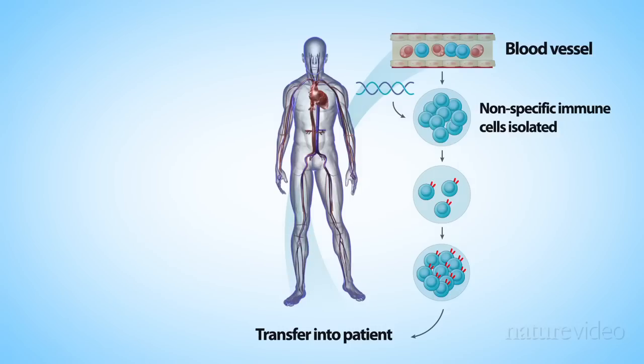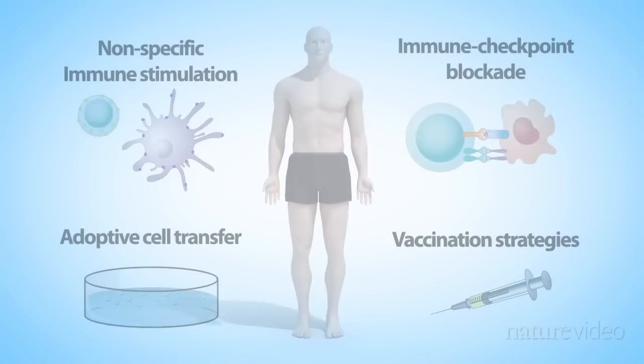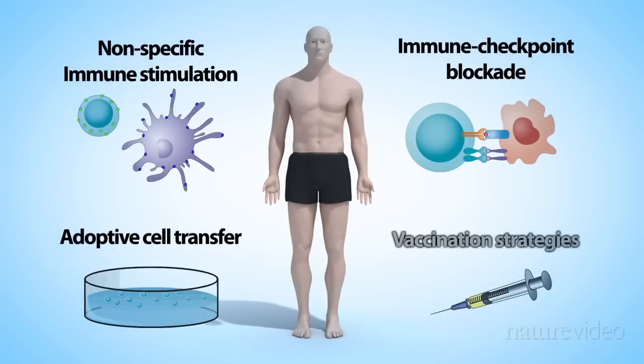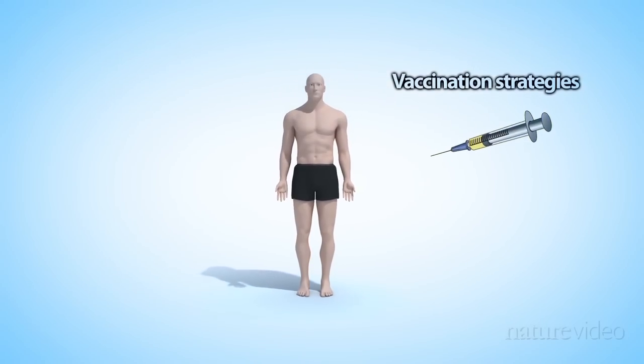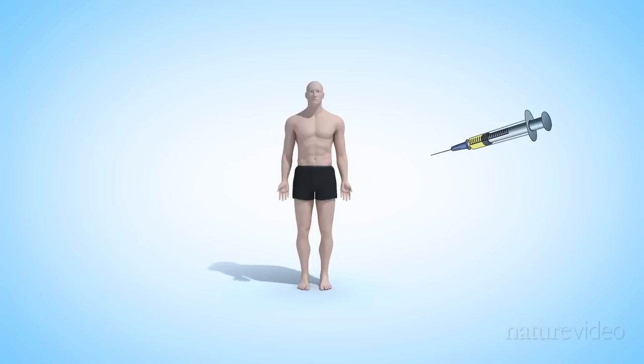At the moment, this approach is experimental. The fourth strategy uses vaccinations. Unlike the BCG vaccine that we mentioned earlier and which targets the immune system in a general way, these vaccines are used to direct immune cells very specifically to the cancer tissue.